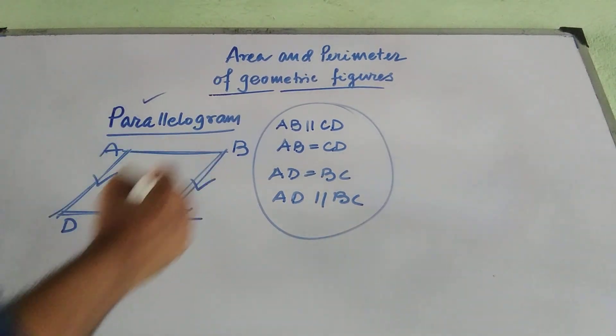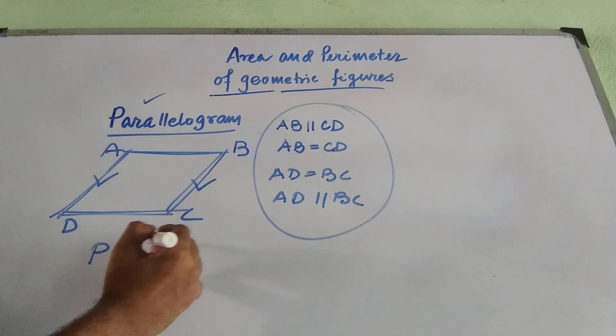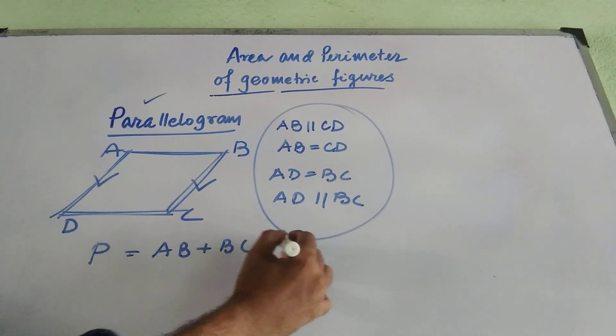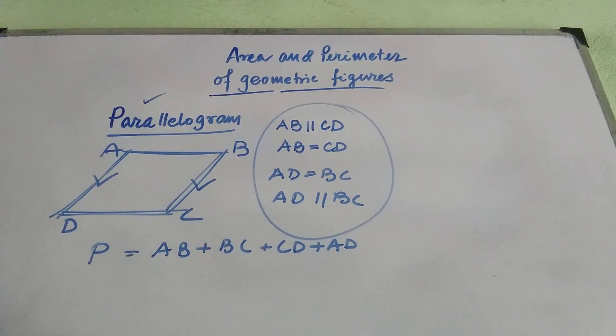Now, what will be the perimeter of this parallelogram? Perimeter, if I denote it as P, that means sum of all sides. That means, AB plus BC plus CD plus AD.